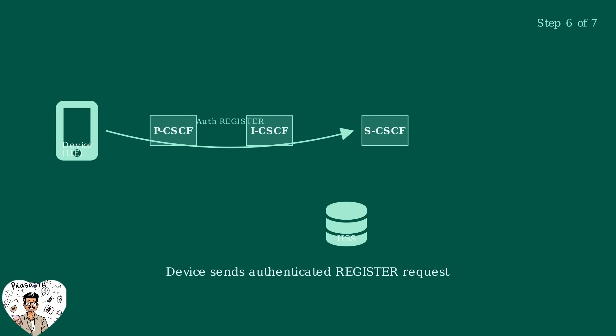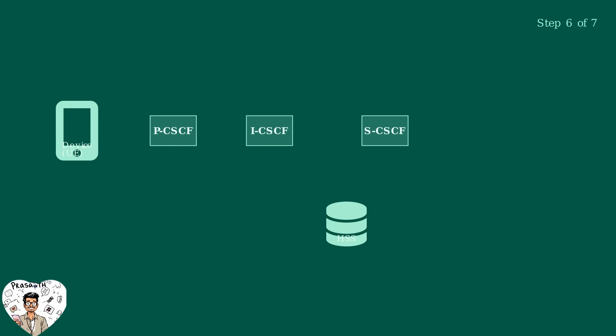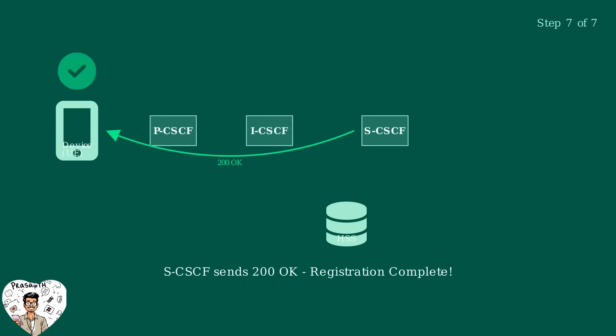Step six: the device receives the challenge and calculates a response using its shared secret key. It sends a new register request with the authentication credentials back through the network. Step seven: the SCSCF validates the authentication response by checking with the HSS. If successful, it sends a 200 OK response back to the device, completing the registration process.